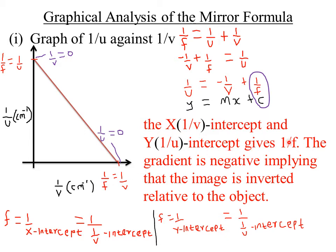The gradient is negative — comparing the equations, y matches the vertical axis value, x matches the horizontal axis value, and 1/v is on the x-axis, so the gradient equals negative 1. The gradient is negative, implying that the image formed is inverted relative to the object — if the object was facing upwards, the image must be facing downwards.